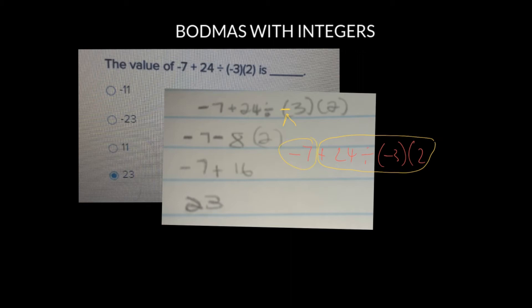So we need to first simplify what is inside the second yellow circle. That means that negative 7 needs to come down to the next line and we will proceed as follows. We have positive 24 and we are dividing that by the product of negative 3 and 2. So negative 3 times positive 2 would leave us with negative 6.